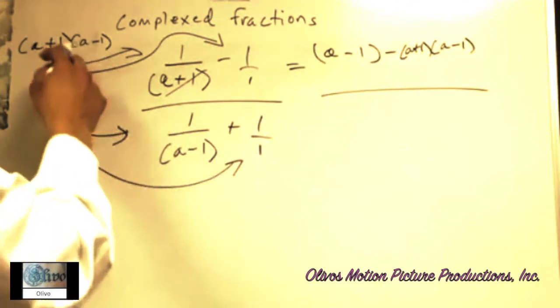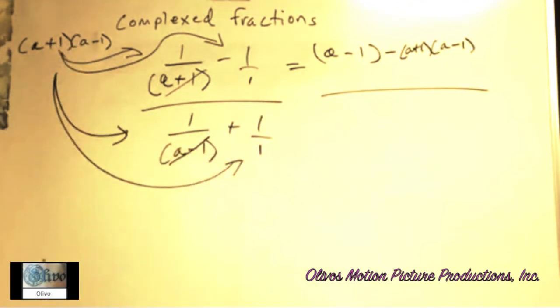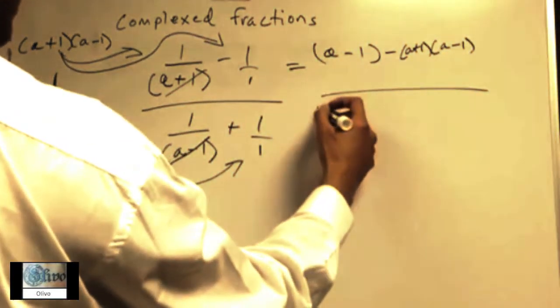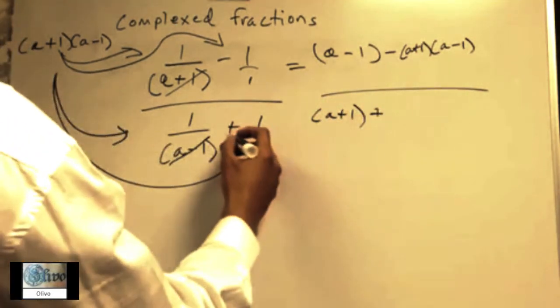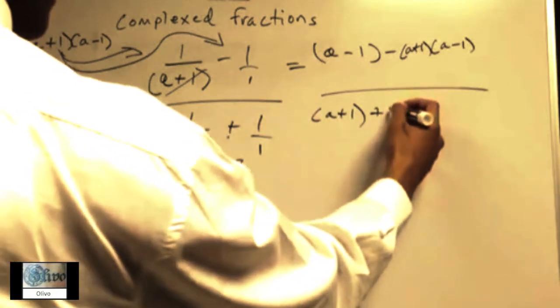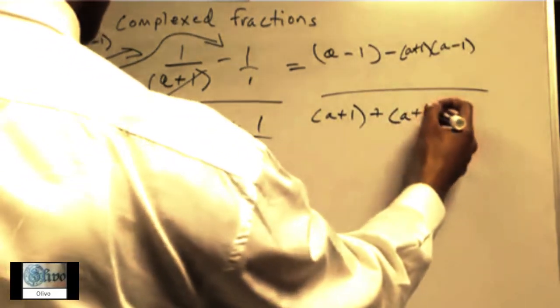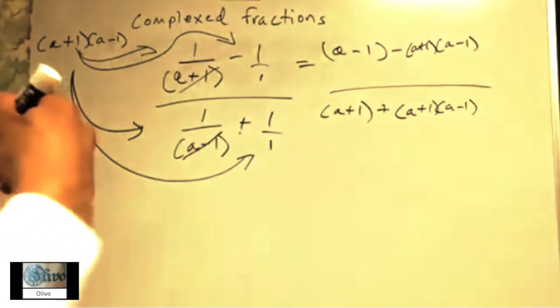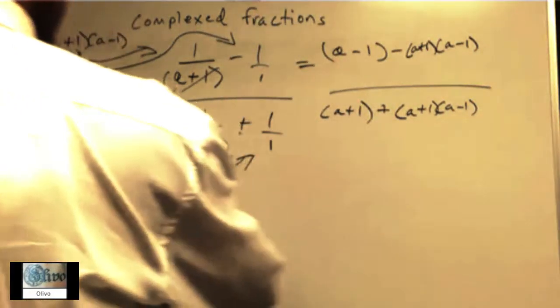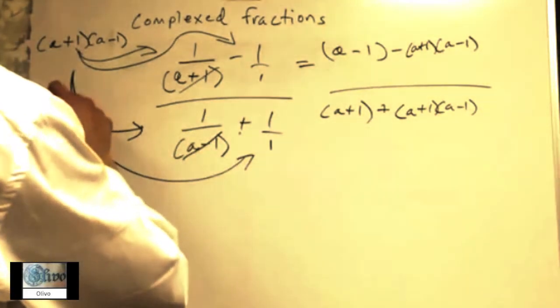And now you want to do this to the bottom one too—multiply this to this fraction and that to the other fraction. So when you multiply this to this fraction, you know that the a-1 will cancel out, leaving you with just a+1. Don't forget to bring over that plus sign, 1, and then you get the same thing: a+1, a-1.